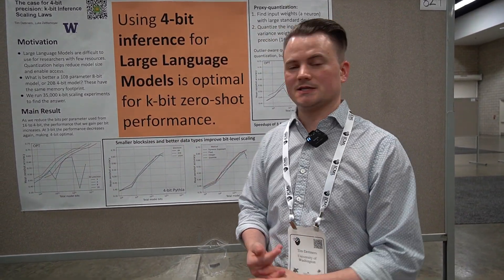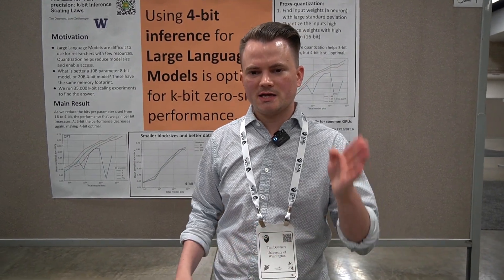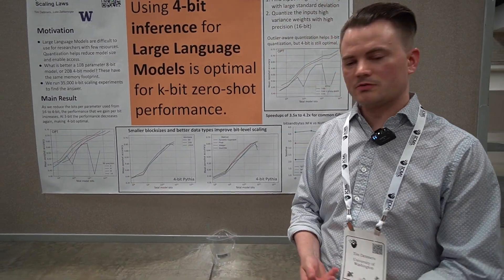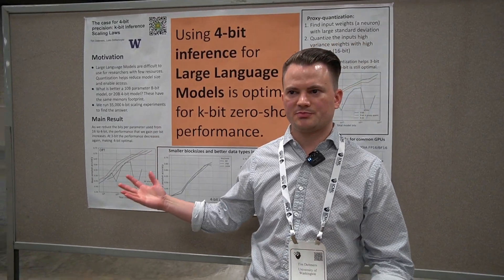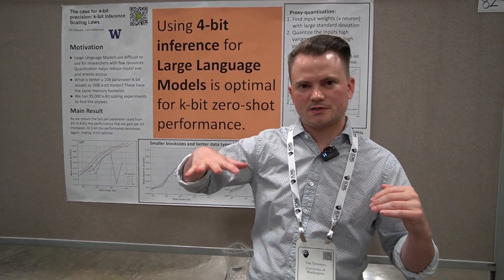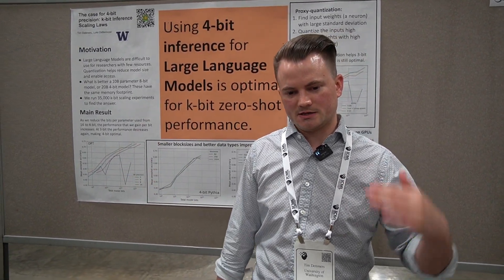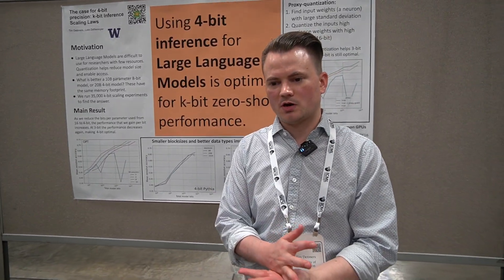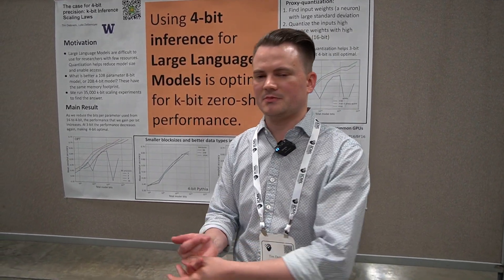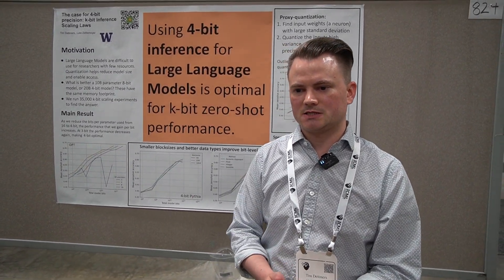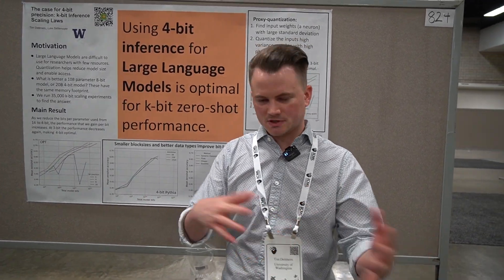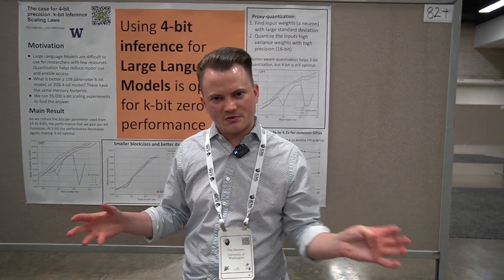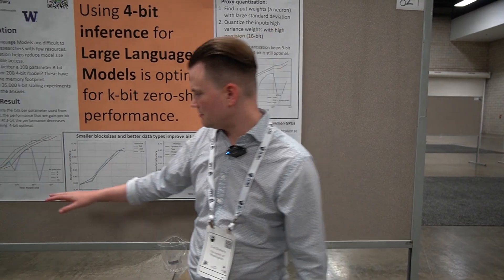This work answers how you can maximize information per bit in a model with a fixed memory footprint. We run 35,000 zero-shot experiments on a pre-trained language model where we quantize the weights between 3 and 8 bits, and the inputs stay at 16-bit precision. We look at models from 19 million to 76 billion parameters, try different data types and quantization procedures, then plot everything to see if we can find some scaling behavior.